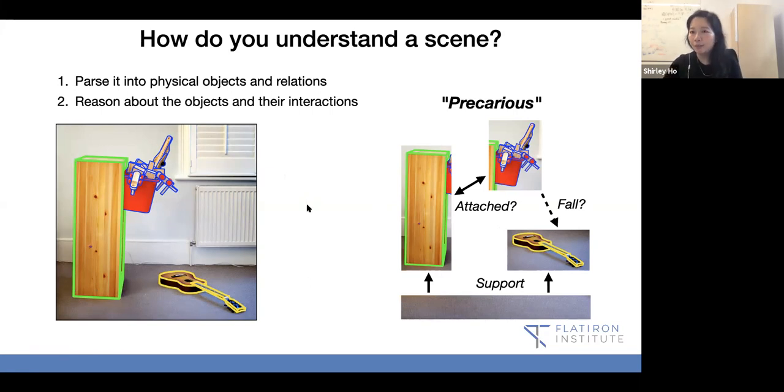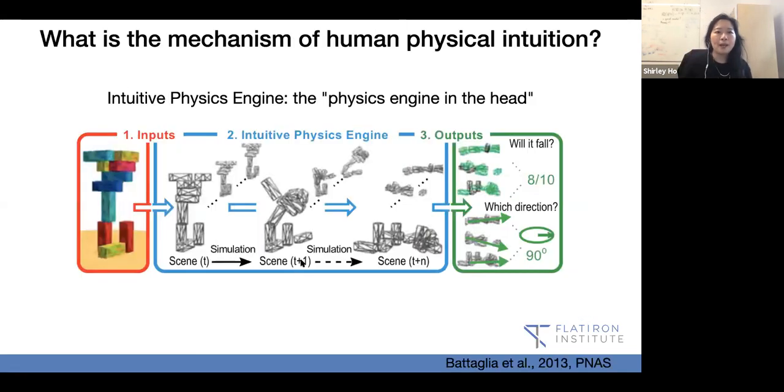We might describe it as precarious, condensing all the information into one word. This is similar to the intuitive physics engine in our head, the physics engine in our head. We have some inputs, say a bunch of blocks, and then situations afterwards that we play out in our head. At time t, what will happen? Time t plus one, what's the next step? Does it collapse? Does it fall? In which direction?